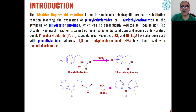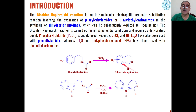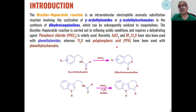Cyclization of beta-aryl amides will lead to the formation of dihydroisoquinoline moieties. In addition to beta-aryl amides, we can also use beta-aryl carbamides as precursors for synthesis of dihydroisoquinoline. This reaction is catalyzed by phosphorus oxychloride, and recently a few more catalysts have also been used for such electrophilic aromatic substitution reactions.